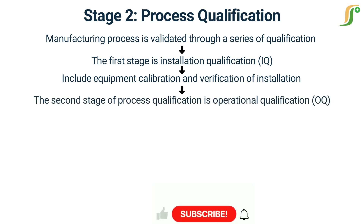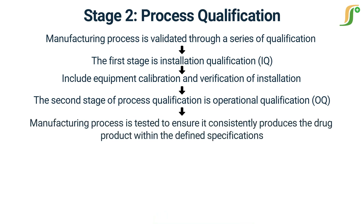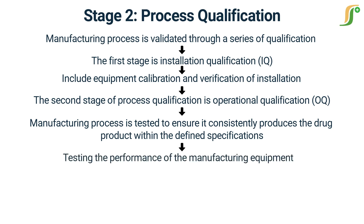The second stage of process qualification is operational qualification (OQ). During the OQ stage, the manufacturing process is tested to ensure it consistently produces the drug product within the defined specifications under normal operating conditions. This may involve testing the performance of the manufacturing equipment and verifying that the critical process parameters are within the specified limits. OQ testing typically involves the use of standardized protocols, such as process mapping, control charts, and statistical process control.